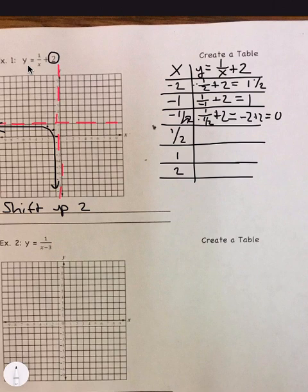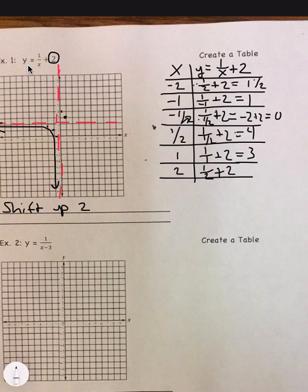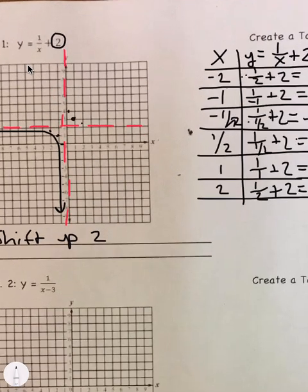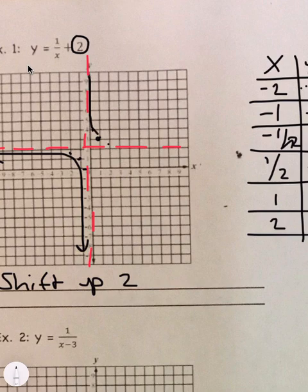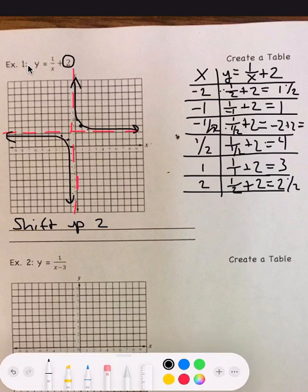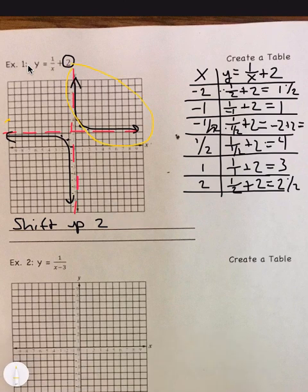And then on the other hand, 1 divided by 1 half plus 2 is going to be equal to 4, 2 plus 2. So I'm right there. I'm going to do 1. 1 over 1 plus 2 is equal to 3. And then when I do 2, 1 over 2 plus 2 is equal to 2 and 1 half. Oh, right there. So this graph, on this side, it's going to look like that. So you can see the two sides look the same here and here. They look the same, just reflected.